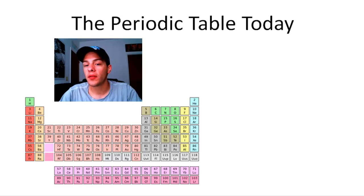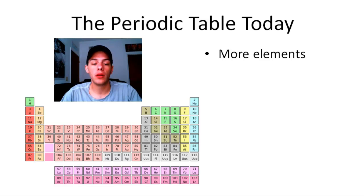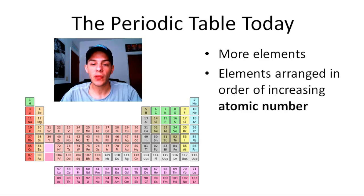And how does Mendeleev's table differ from the periodic table today? Well, for one, we have much more elements. Today, we have about, I think, 118 known elements in our periodic tables. That's almost three times as much as what Mendeleev was dealing with in his time.